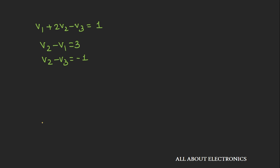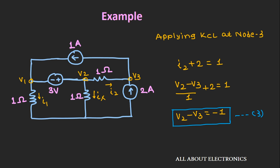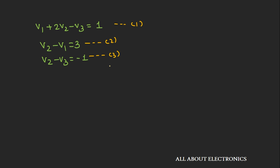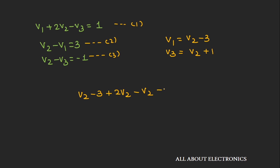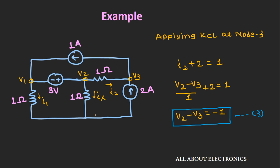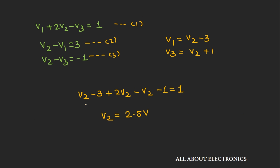We now have three equations. Since we need V2 to find Ix, we express V1 and V3 in terms of V2 from equations 2 and 3: V1 equals V2 minus 3 and V3 equals V2 plus 1. Substituting into equation 1: (V2 minus 3) plus 2V2 minus (V2 plus 1) equals 1. Simplifying gives V2 as 2.5V. Therefore, current Ix equals V2 divided by 1 ohm, which is 2.5A.